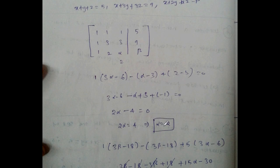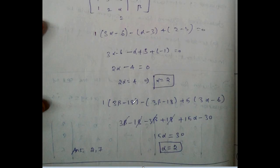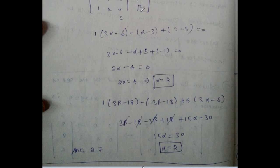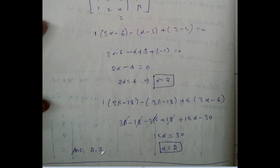Simplifying: 3 alpha minus 6 minus alpha plus 3 minus 1, giving 2 alpha minus 4 equal to 0, so 2 alpha equals 4, alpha equals 2. Then to find beta, check the augmented 3x3 matrix by negating rows and columns and cross multiplying. Simplifying gives alpha equal to 2 and beta equal to 7.